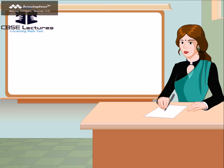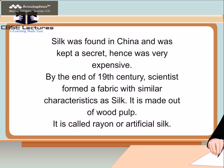I'll tell you about silk and its man-made version. Silk was found in China and was kept a secret, hence was very expensive. By the end of the 19th century, scientists formed a fabric with similar characteristics as silk. It is made out of wood pulp. It is called rayon or artificial silk.